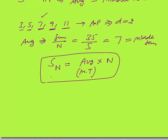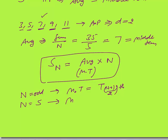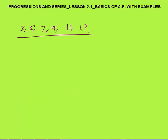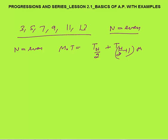Now let me discuss how to find the middle term. When n is odd, the middle term is the term number n plus 1 by 2. For example, if n equals 5, middle term is term number 5 plus 1 by 2, which is the 3rd term — that's 7 in our example. When n is even, the middle term is the average of the n by 2 th term and the n by 2 plus 1 th term — that is, those two middle terms divided by 2.